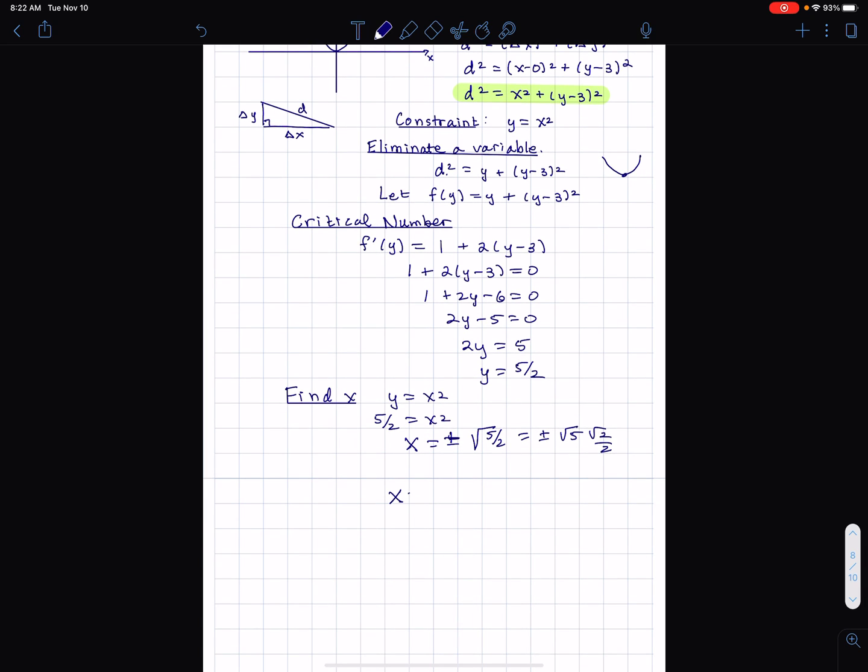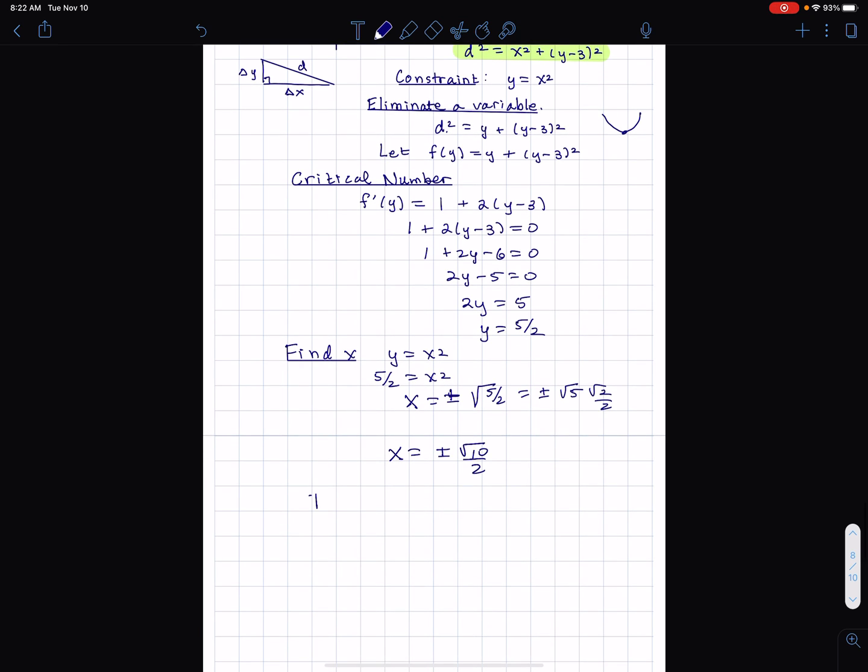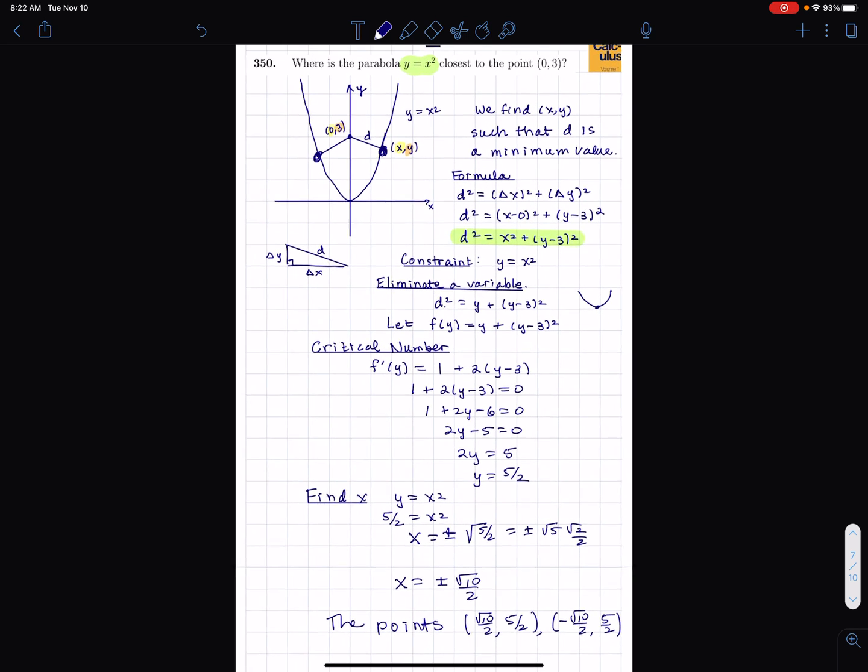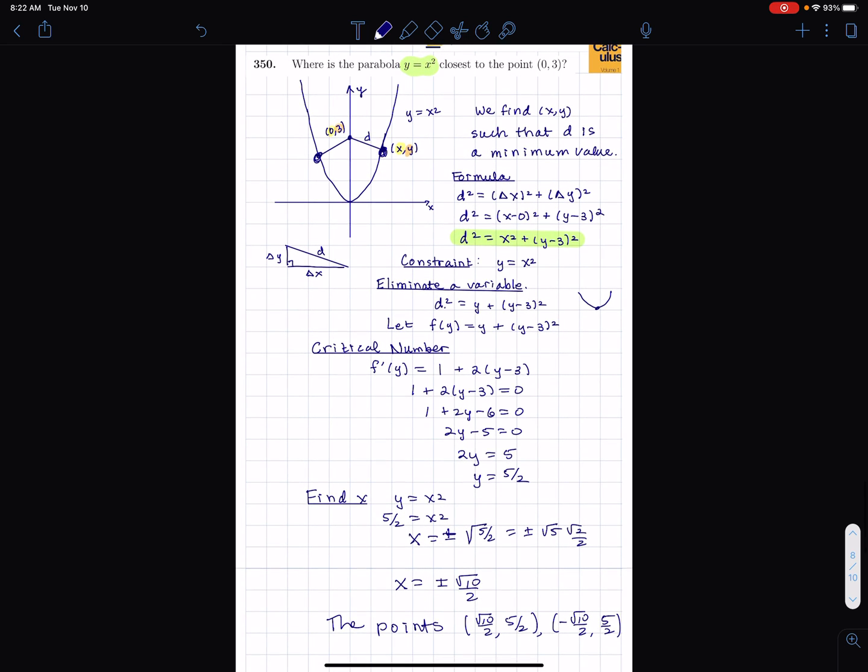So the answer is the points (square root of 10 over 2, 5/2) and (negative square root of 10 over 2, 5/2). So there's two points which we can see anyway that would be the case on this picture here. All right, okay that's all, thank you.